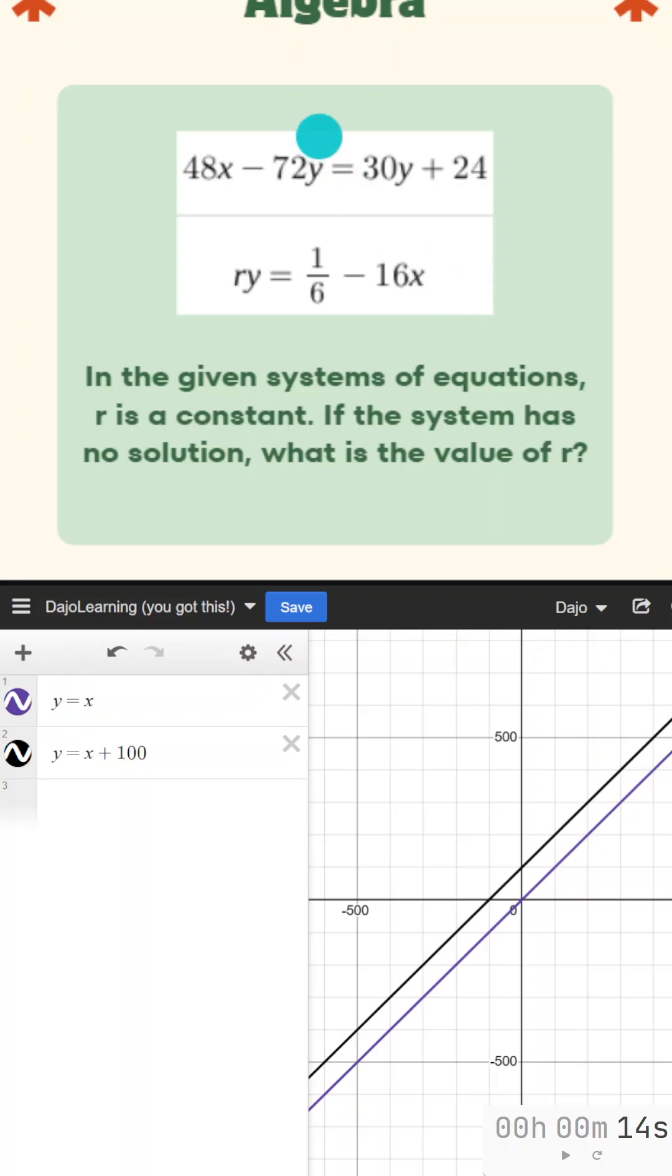So what we're really trying to do is make these two equations parallel lines. And how does that happen? When you have the same slope.